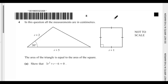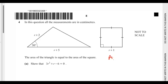Question four. In this question, all the measurements are in centimeters. The area of the triangle is equal to the area of the square. So we can say that the area of the triangle, denoted by A subscript T, is equal to the area of the square, denoted by A subscript S.